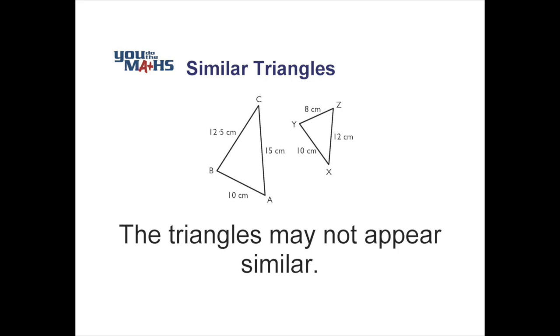If we look at the triangle on the right, we can see that those lengths are in different positions. The smaller side YZ is at the top, whereas on the triangle at the left, the smaller side AB is at the bottom.